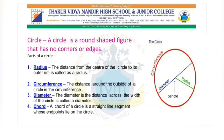Let's see the definitions. Radius — the constant, meaning the same distance from its center, is called the radius of the circle. Circumference — the perimeter of a circle is called its circumference. Diameter — a chord passing through the center of a circle is called the diameter. Chord — a line segment joining two points on a circle is called a chord.